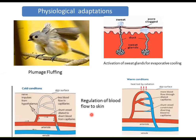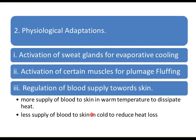So in physiological adaptations, animals bring changes in their physiology for regulation of heat exchange. These include: activation of sweat glands for evaporative cooling; activation of certain muscles for plumage fluffing; and regulation of blood supply to the skin — more in warm weather to dissipate heat, less in cold weather to reduce heat loss.